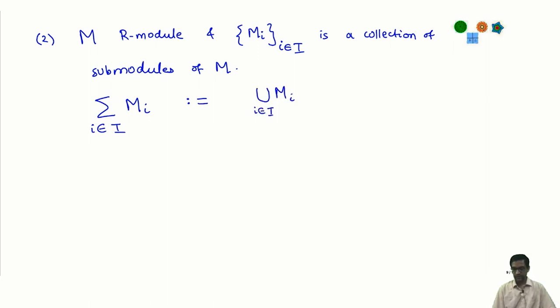This is just some subset of my ambient module and I take the submodule generated by this union. I have just defined in definition 1 what the submodule generated by a set is. This is called the sum of m i s. It is called the sum of the submodules. That is the definition.